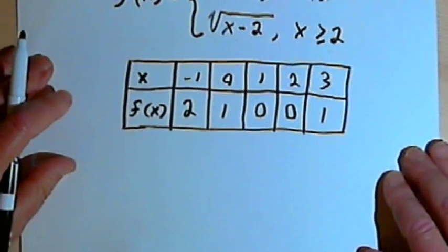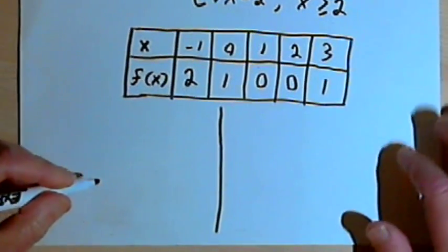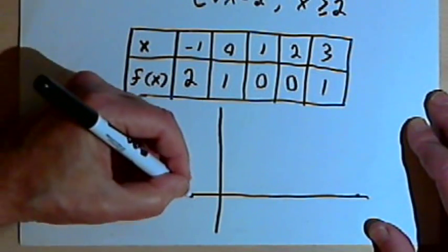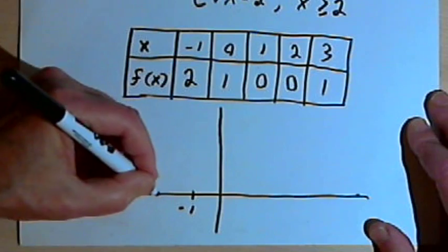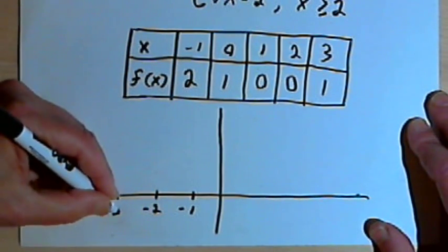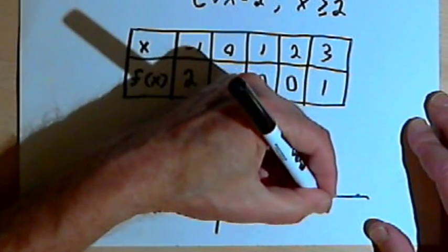Given this table of values, I can graph this function as well. So I'll draw a rough graph. I'll put in some x values: negative 1, negative 2, negative 3, 1, 2, 3.